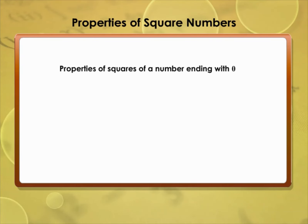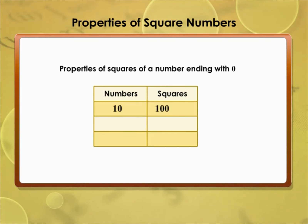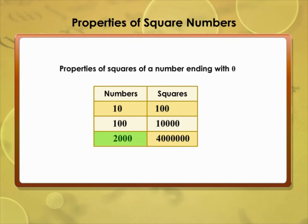Properties of squares of a number ending with 0: if a number has 1 zero in the unit's place, then the square of that number will have 2 zeros. If a number has 2 zeros in the unit's place, then the square of that number will have 4 zeros in the unit's place.